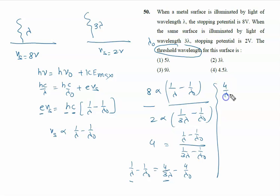So we will say 4 upon lambda node minus 1 upon lambda node equal to 4 upon 3 lambda minus 1 upon lambda.